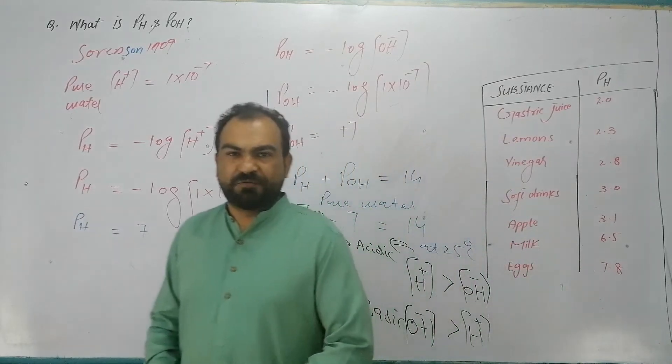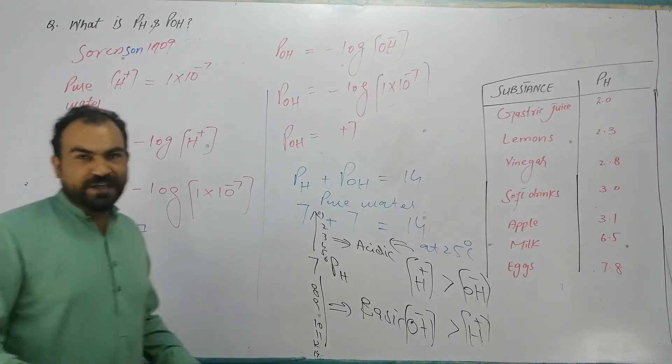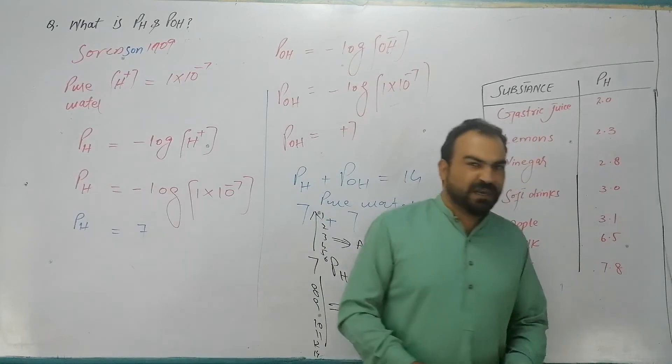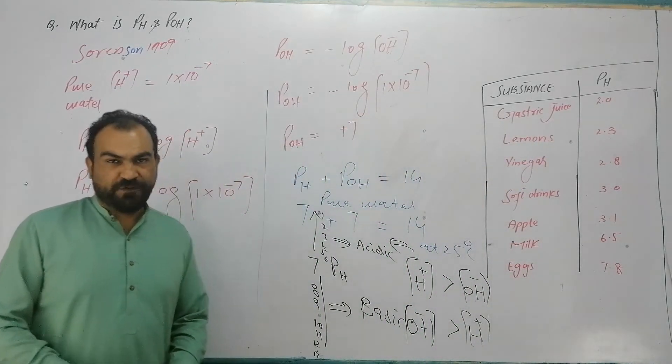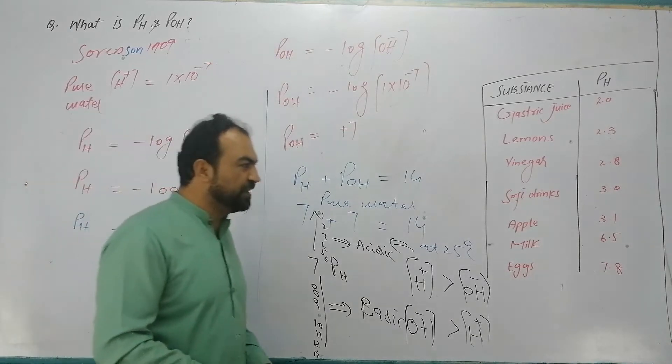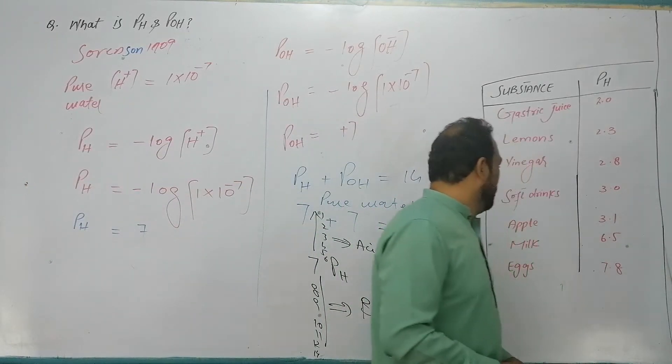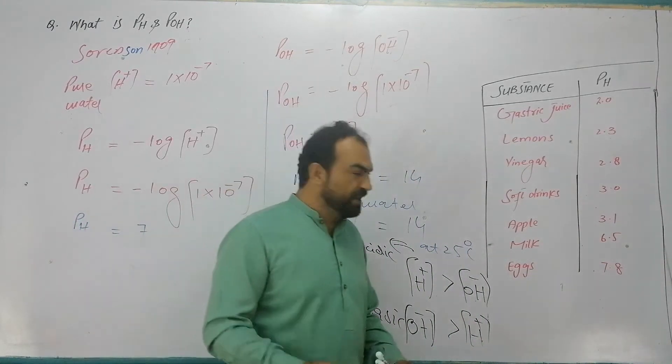For example, soft drinks like Coca-Cola, Sprite, 7Up have pH around 2.8. Citrus fruits have pH 3 to 3.5, apple is 3.1, and milk is acidic.